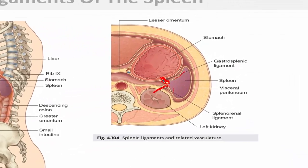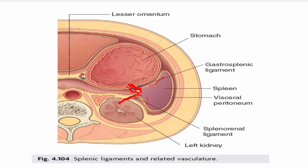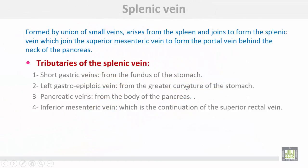The gastrosplenic ligament connects the hilum of the spleen to the stomach, and the lienorenal ligament connects the hilum of the spleen to the left kidney. The splenic vein is formed by the union of small veins arising from the spleen, which join to form the splenic vein, which then joins the superior mesenteric vein to form the portal vein behind the neck of the pancreas.